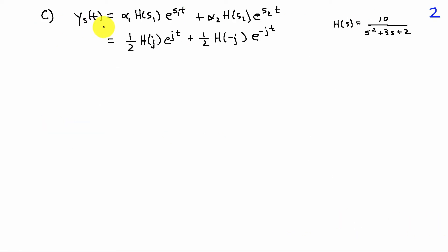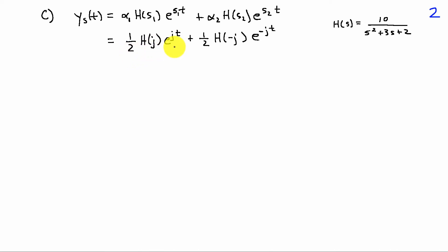The steady-state response takes the form α₁ H(s₁) e^(s₁t) + α₂ H(s₂) e^(s₂t), where H(s) = 10 / (s² + 3s + 2). Since s₁ = j, we have ½ H(j) e^(jt) + ½ H(−j) e^(−jt) for the specific output of this system.